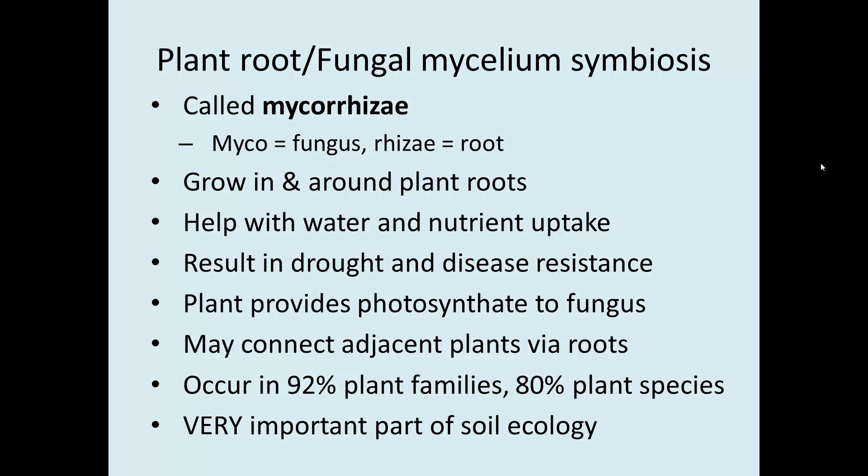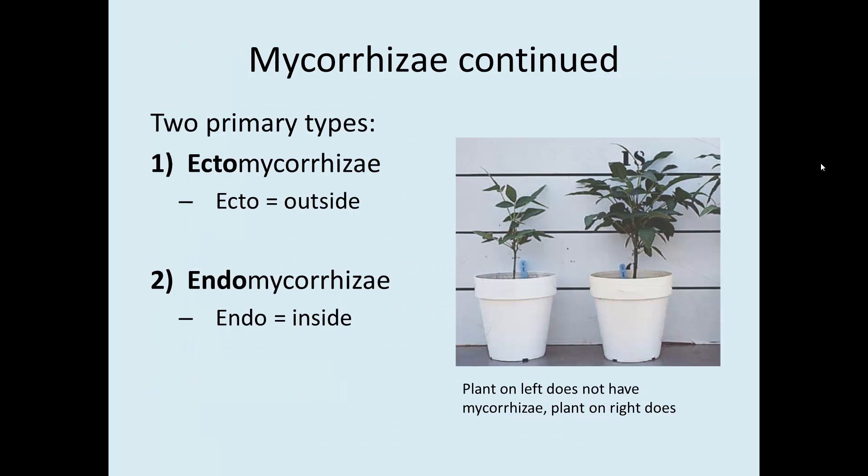Plants with mycorrhizae are found to be more drought-resistant and more disease-resistant — in general, just more vigorous. Plants may actually connect to adjacent plants via these fungal networks, so they can all become interconnected. This is very common: 92% of plant families and 80% of plant species form mycorrhizae. It's an extremely important part of soil ecology and plant physiology.